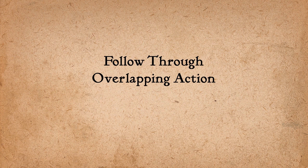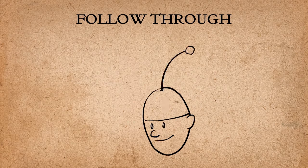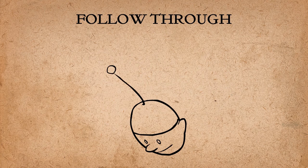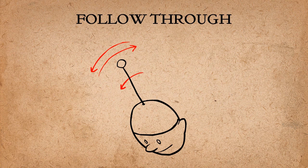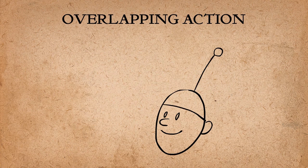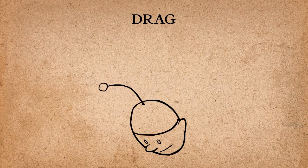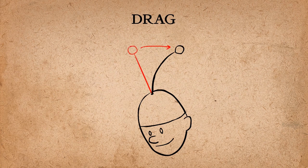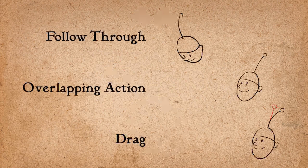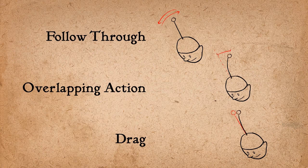Follow through and overlapping action are often associated with another technique called drag. These names all describe the same thing, but in different ways. For example, follow through refers to the way parts of the body continue to move after the body is stopped. Overlapping action describes the offset between the timing of the main body and its other parts. Drag describes the technique of delaying the movement of body parts in relation to the main body. All three of these are basically describing different aspects of the same thing.